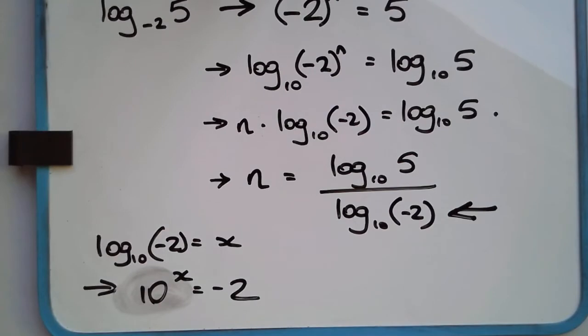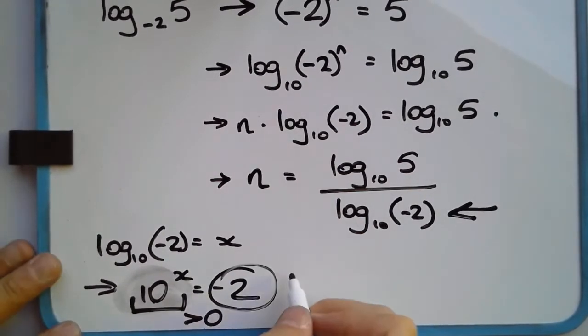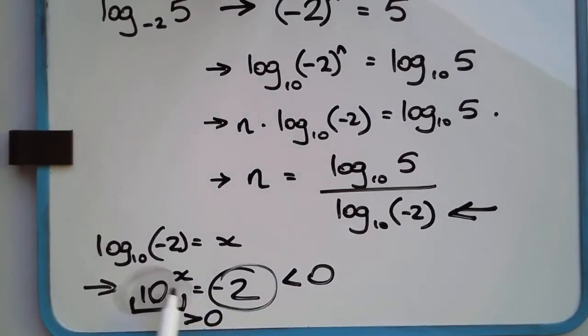Now, the problem with this exponential is that 10 to the power of x, doesn't matter what value of x you use, 10 to the power of x is always going to be a positive number. So that side is always going to be greater than 0, but negative 2 is less than 0. We're never going to find there's no x, at least in the numbers that we use in our number system, there's no value that we can substitute in here for 10 to the power of x so that we get a negative number on this side.